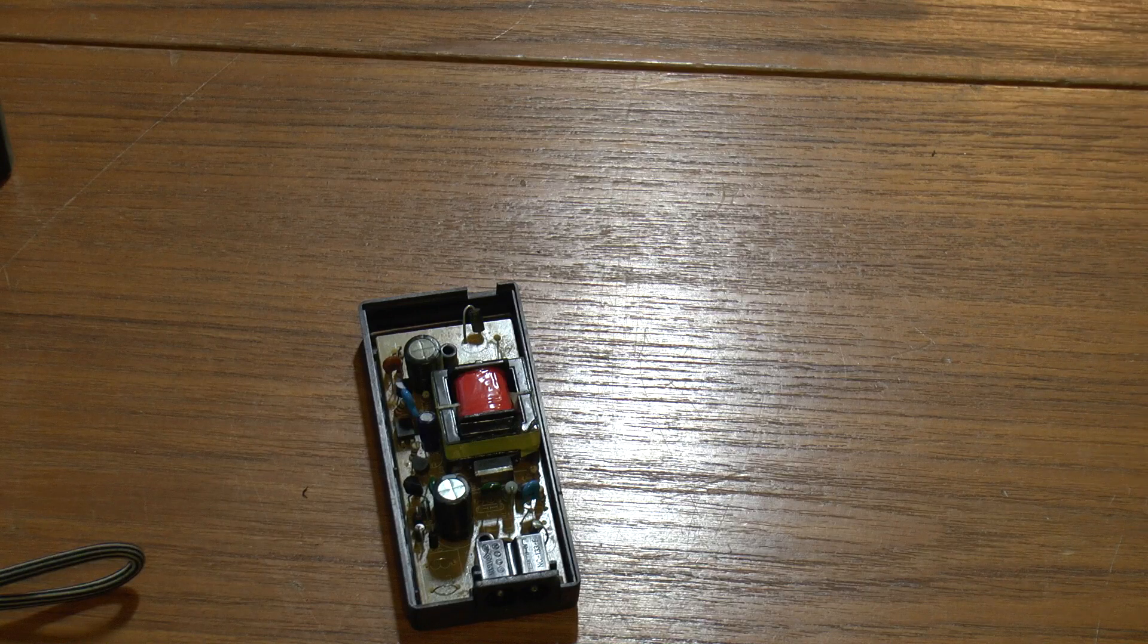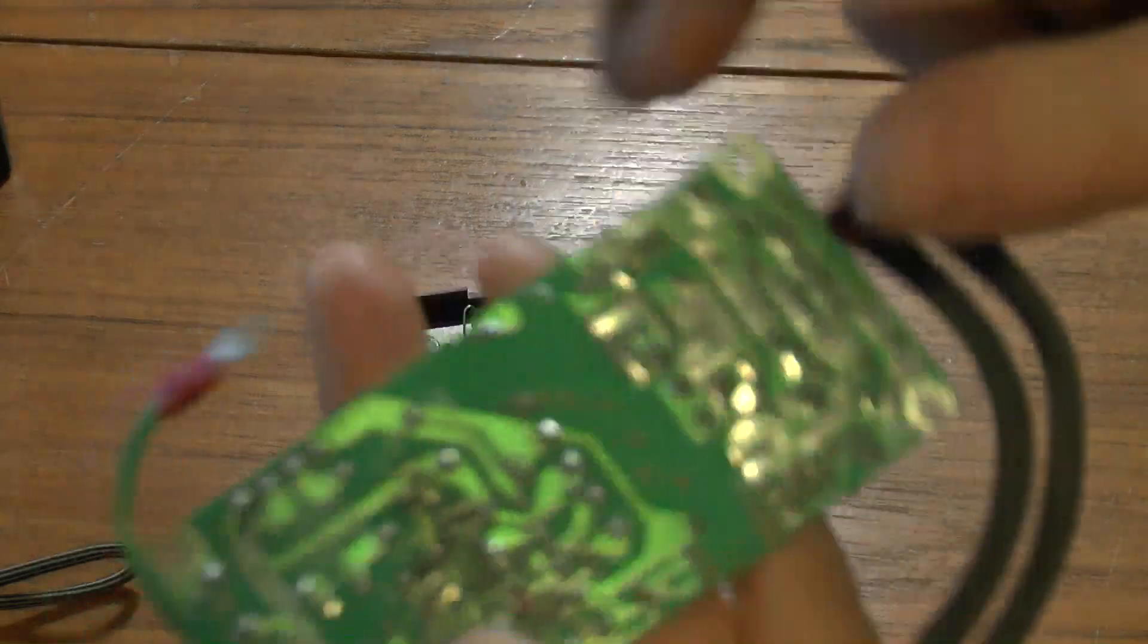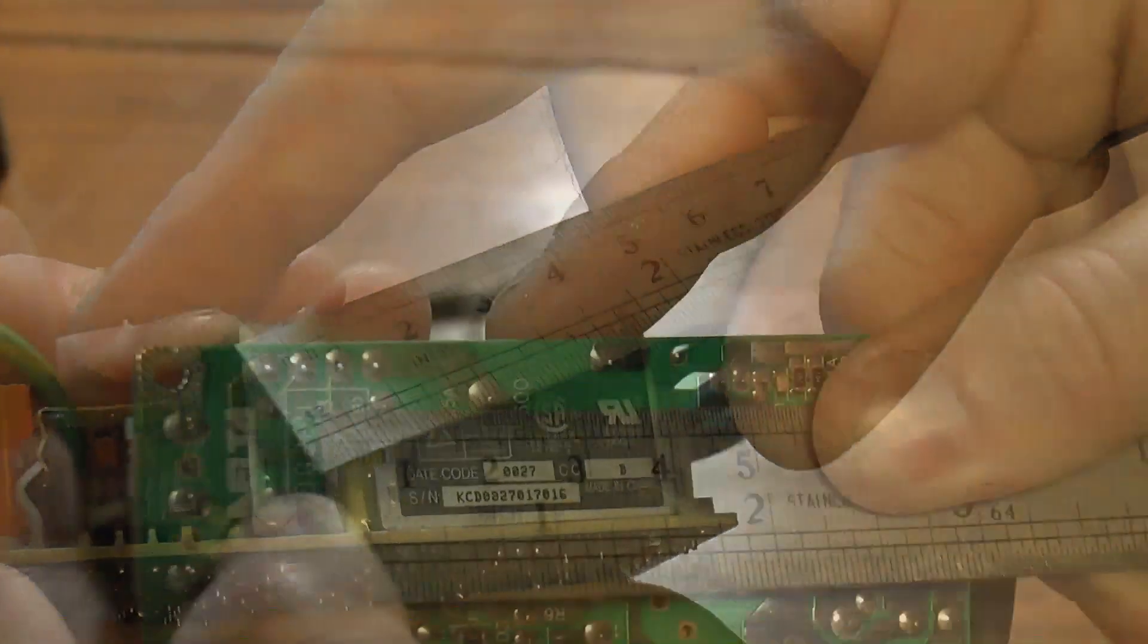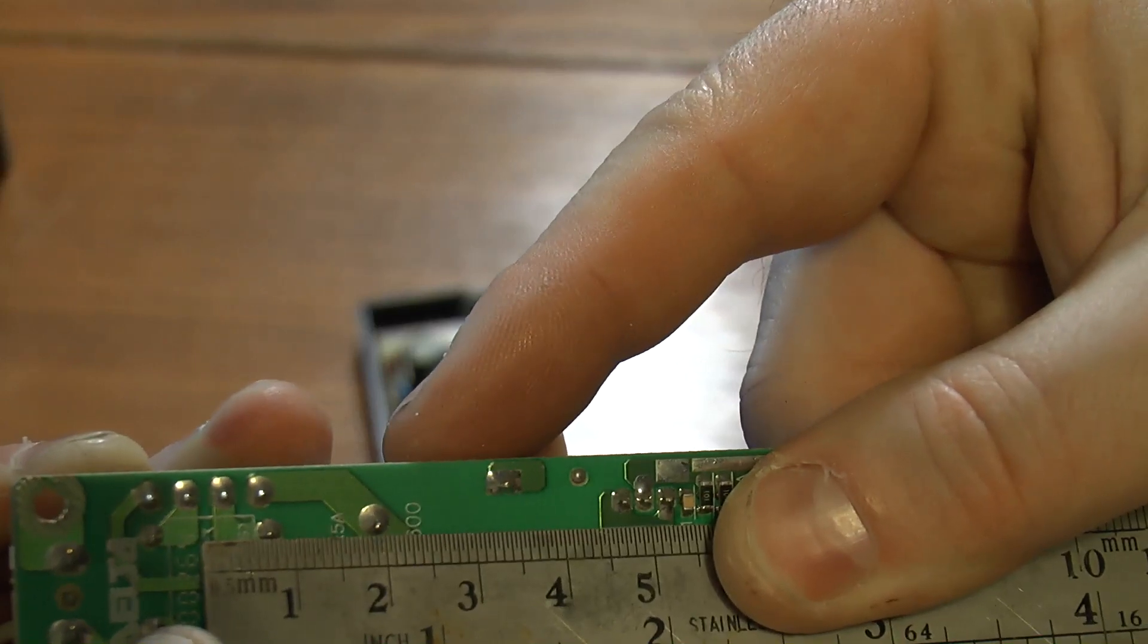And similarly if I grab this delta power supply. Here's the bridge rectifier. That one's a lot tighter. That's closer to 1.5 mm between the two tracks.